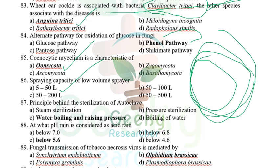Spraying capacity of low volume spray is 5 to 50 liters. The principle behind sterilization in autoclave is boiling of water and raising the pressure — water must boil for the pressure to rise. The answer is raising pressure by boiling water.